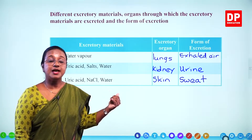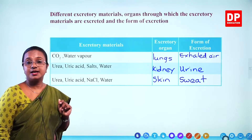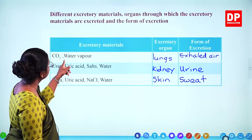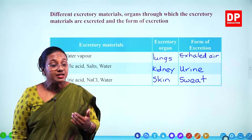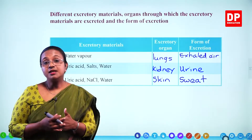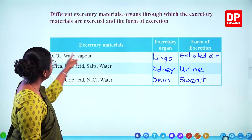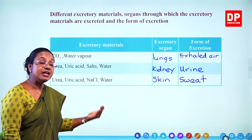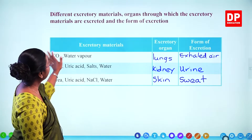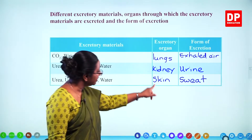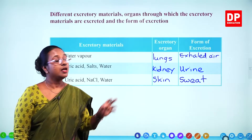The kidneys are the main excretory organs, giving out the nitrogenous waste products — urea and uric acid — in the form of urine. There is something common to all excretory materials: water vapour, water, water. Water is produced as a by-product in cellular respiration. If there is too much water in the body, that is also not good and it has to be excreted. Water also acts as a medium to remove excretory substances. Remember the different excretory materials, the three organs, and the form of excretion.